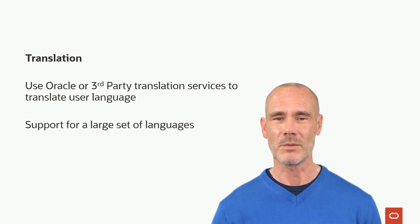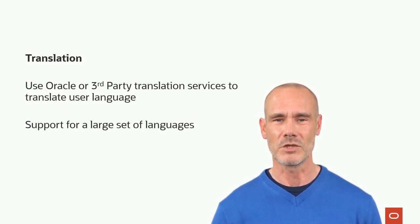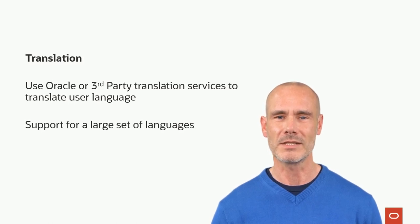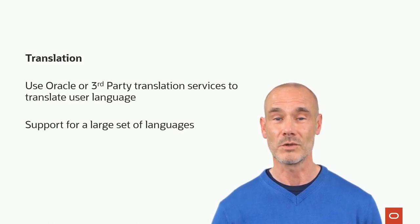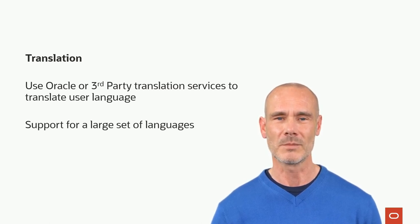If your assistant requires a language not natively supported, then using translation services is the way to go. Let's start with a small recap on translation services. A translation service becomes handy when you require a language not natively supported by ODA. You can use Oracle's AI language translation service, but you can also use a third-party one like Google or Microsoft.